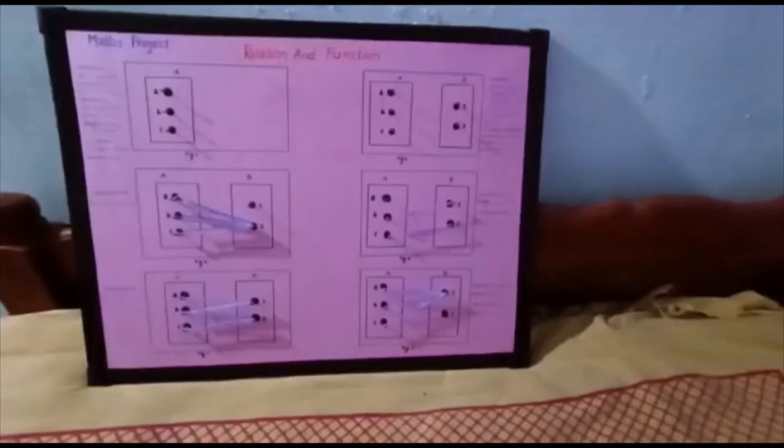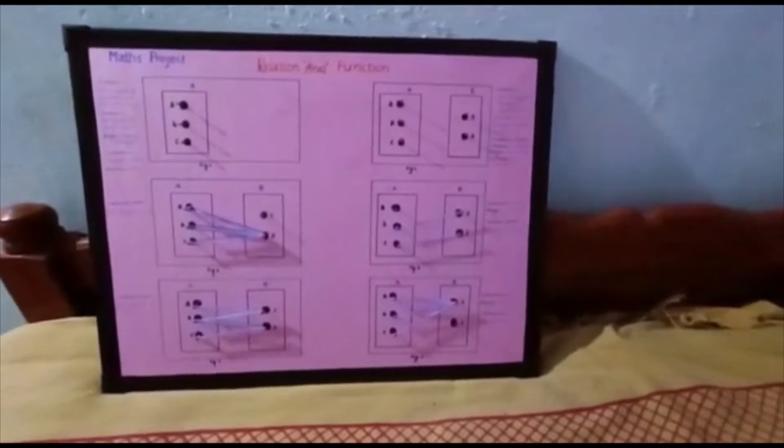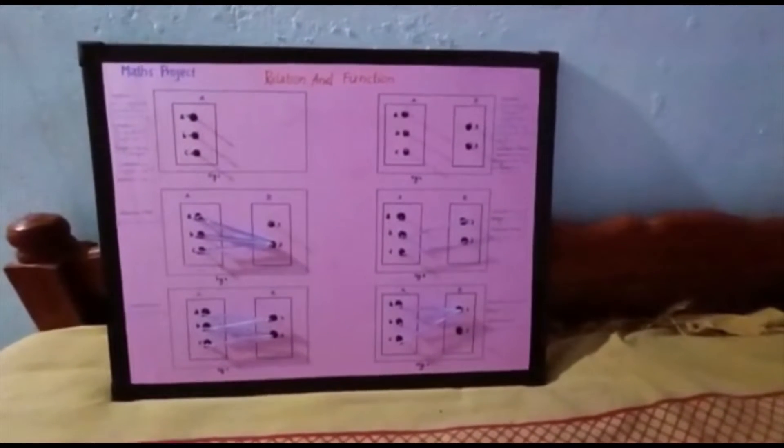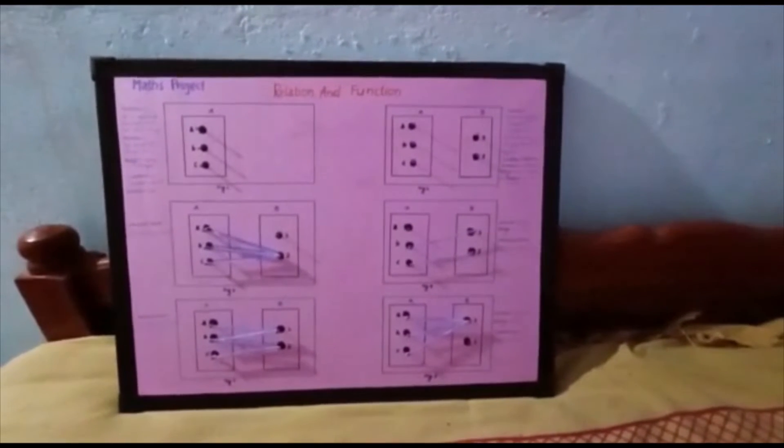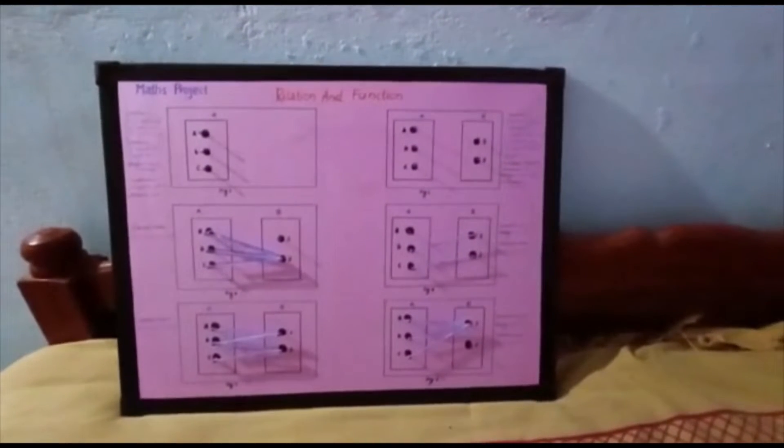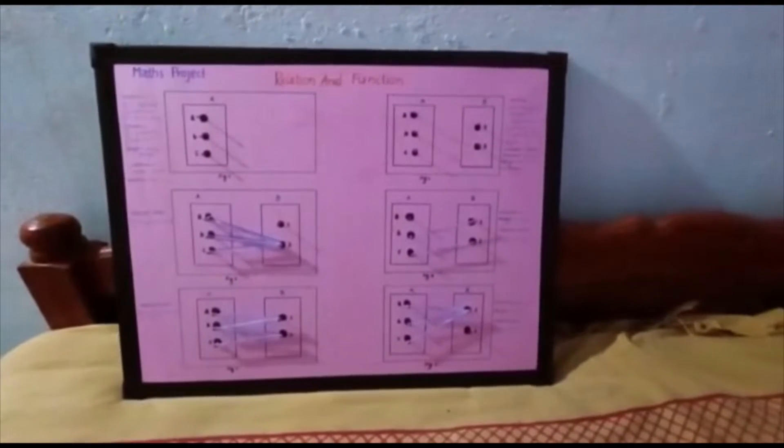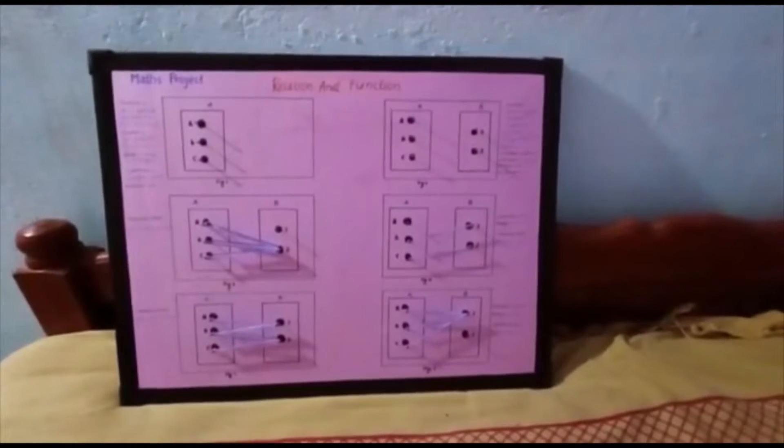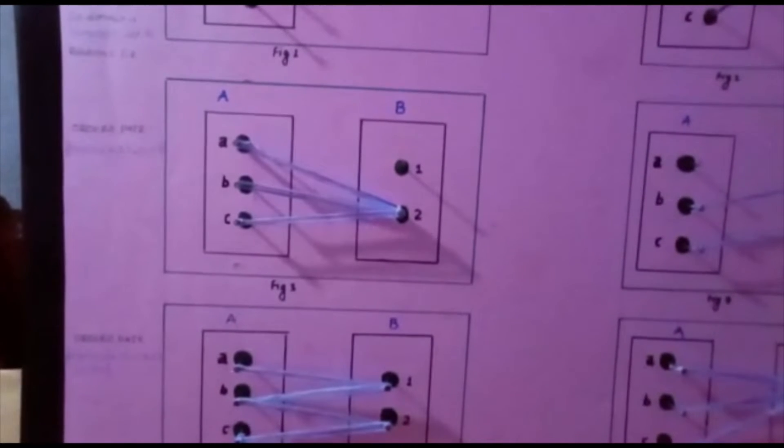Similarly, a function is a special type of relation such that each element in set A has one and only one image in set B, such that f(x) equals y. Thus, we can say a function is a subset of relation. The domain of a function is all inputs, the range is all images, and its co-domain is all set elements in set B. Let us now understand with some examples.